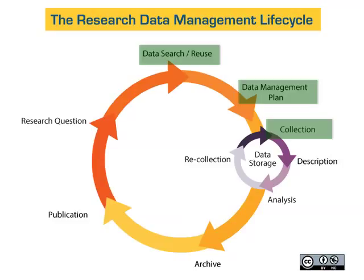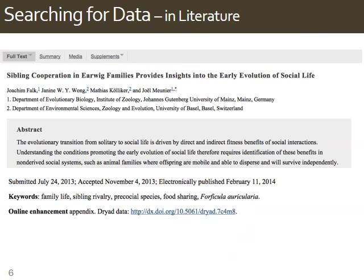It's also good practice to do a data search at the same time as your literature search, to look for other researchers' data sets to inform your own experimental design. There are three ways to search for data. Let's start with searching for data in literature. Say you're searching the topic of earwigs — here's an example of an article you could have found in a literature search using a normal article database like Web of Science.